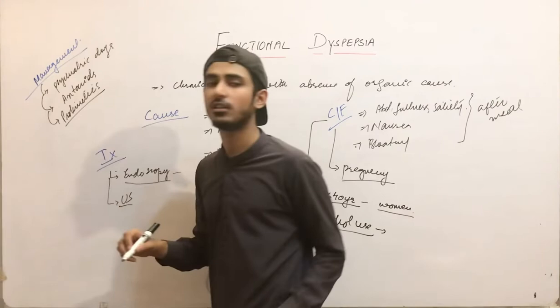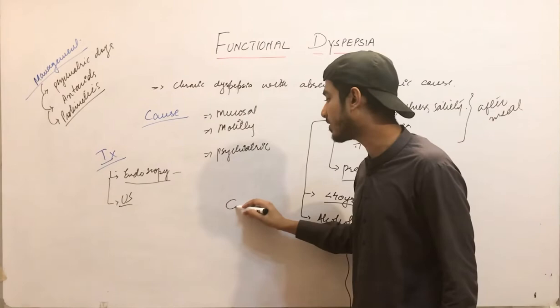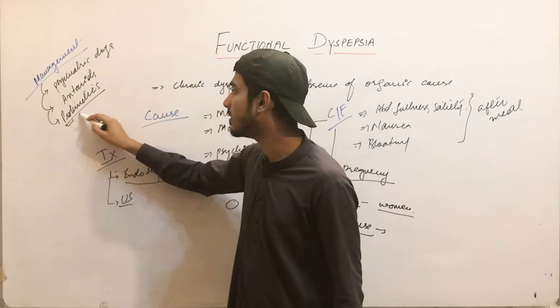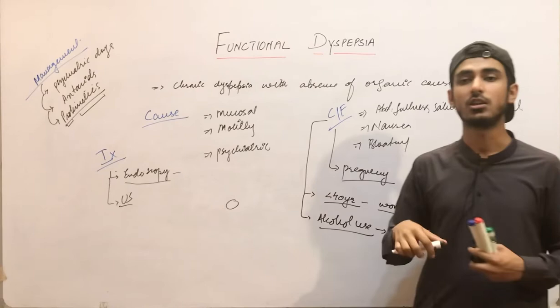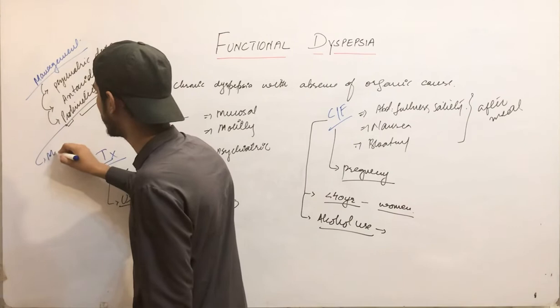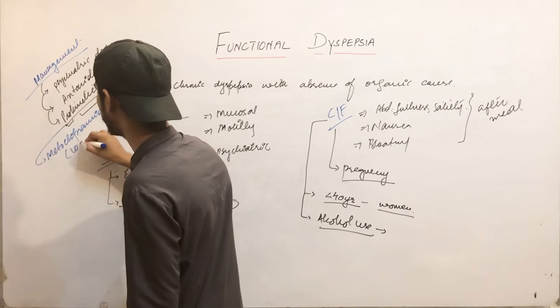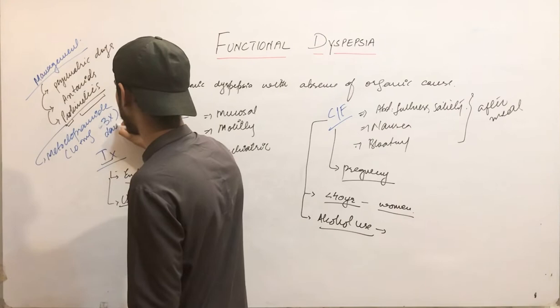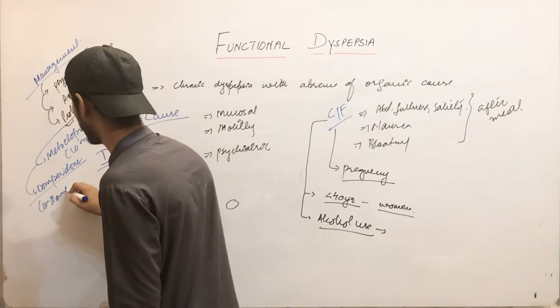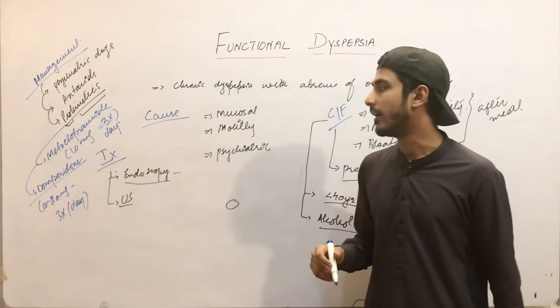You can also give prokinetics. Prokinetics are given because they increase or strengthen the lower esophageal sphincter tone and they also fasten gastric emptying — as their name indicates, they are prokinetics, meaning they speed up the emptying of the stomach. The prokinetics we give are metoclopramide 10 mg three times a day, or we can also give domperidone, which is 10 to 20 mg given three times per day.